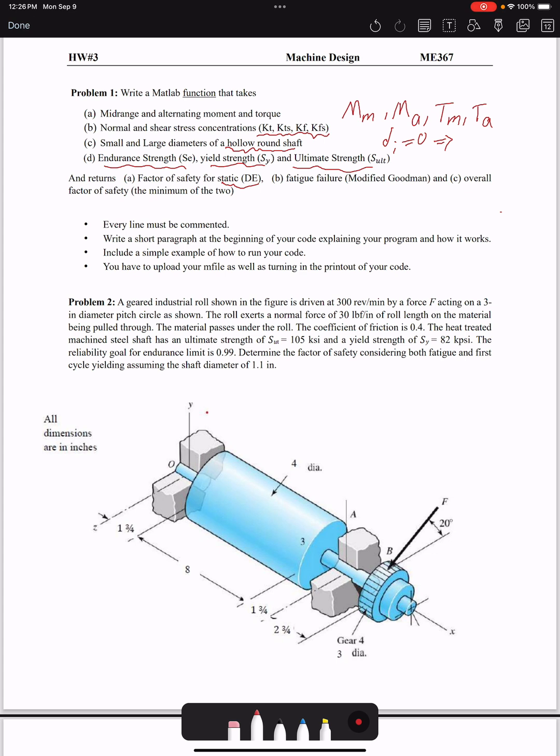We have two failure criteria: we are going to use distortion energy or von Mises. For fatigue failure, we are going to use modified Goodman, and then the overall factor of safety.